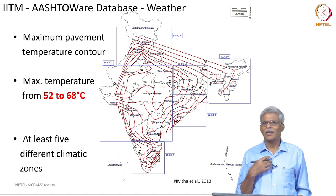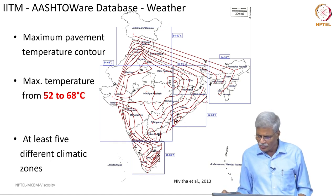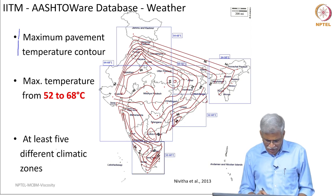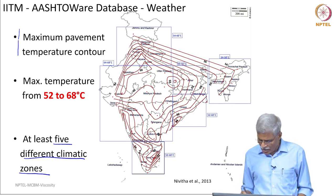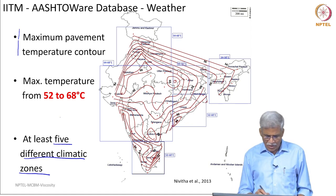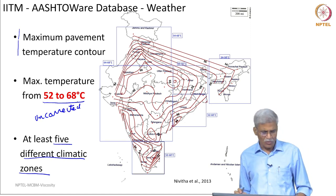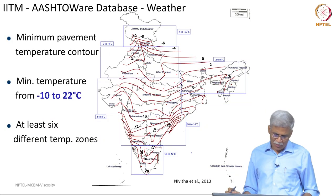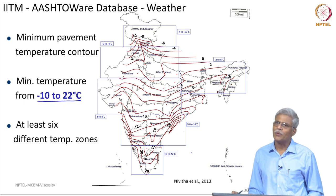This work was carried out by Dr. Nivitha as part of her M.Tech dissertation, and she has given a series of lectures on chemical composition, aging, and polymer modification. What you see here is the maximum pavement temperature contour. We were able to see that there are at least five different climatic zones that exist in our country, and the maximum pavement temperature — uncorrected for traffic — varies from 52 to 68 degree centigrade.